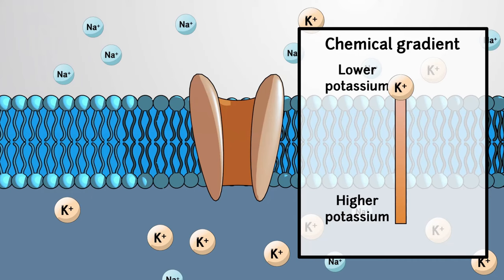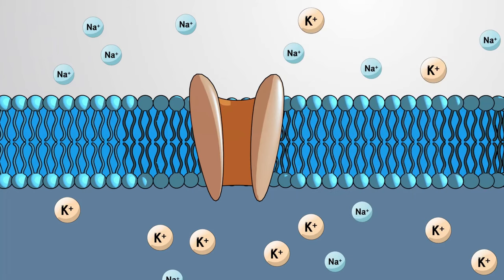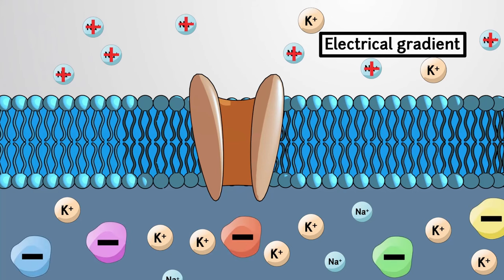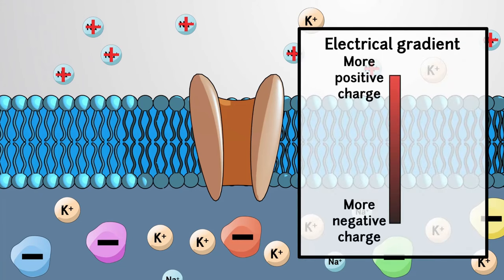However, ion concentration is not the only factor creating a gradient across the cell membrane. The separation of ions and molecules with positive and negative charges also means that there is an electrical gradient present. The prevalence of positively charged sodium ions outside of the cell and the abundance of negatively charged proteins inside are two major factors that contribute to the overall difference in charge across the membrane.